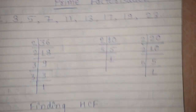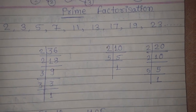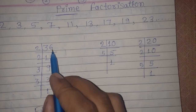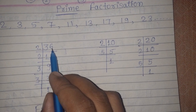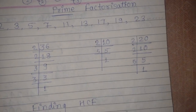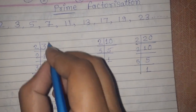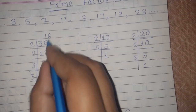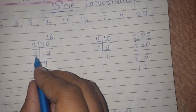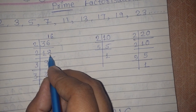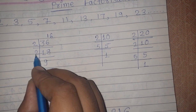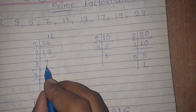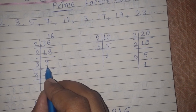Suppose we are going to find the prime factorization of 36. 36 is an even number, so it is divisible by 2. Dividing: 2 × 18 = 36. Again, 18 is an even number, it is divisible by 2: 2 × 9 = 18. Now 9 is an odd number, so it is not divisible by 2.